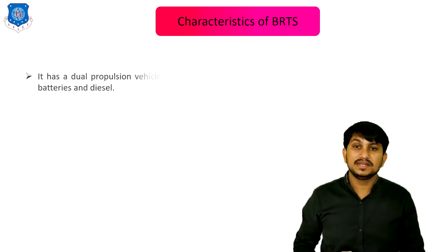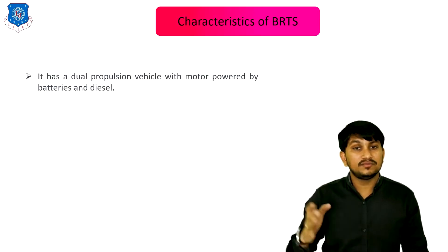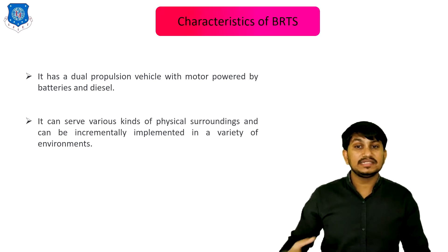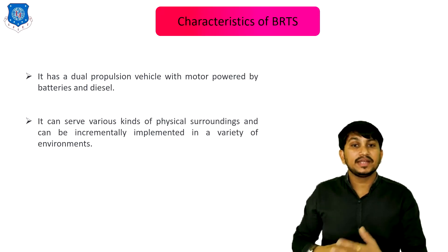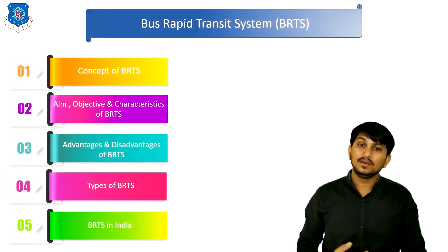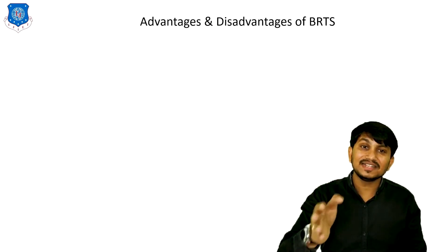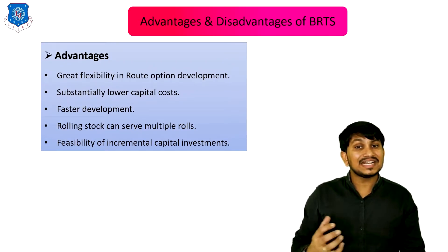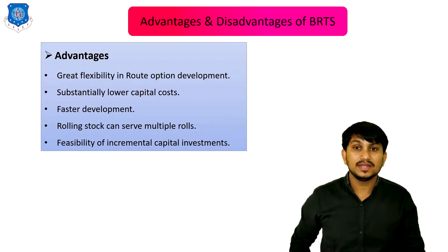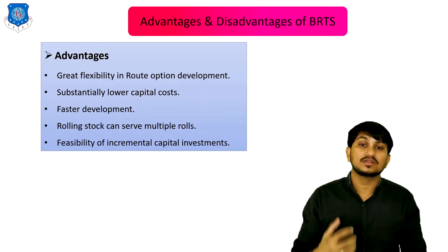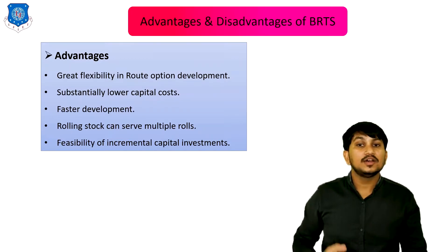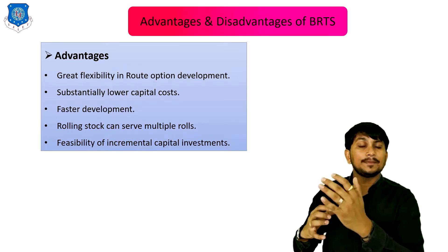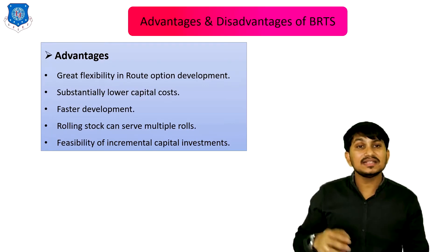The characteristics of BRTS include a dual propulsion vehicle with a motor powered by batteries and diesel. It can handle various kinds of physical surroundings and can be incrementally implemented in a variety of environments. The advantages of BRTS are: it gives great flexibility in route option development, it has substantially lower capital cost, it has faster development, rolling stock can serve multiple roles, and feasibility of incremental capital investment is more in BRTS.